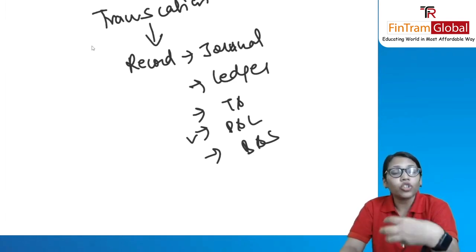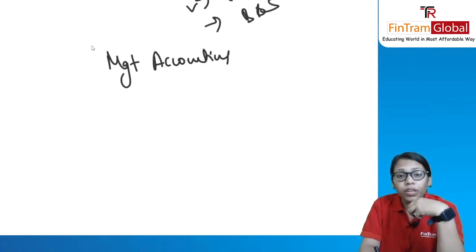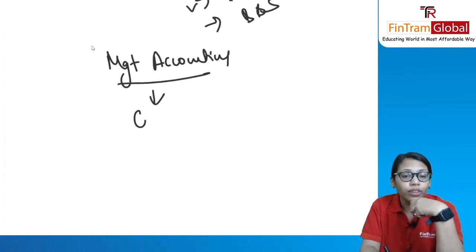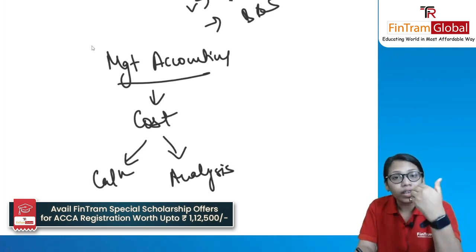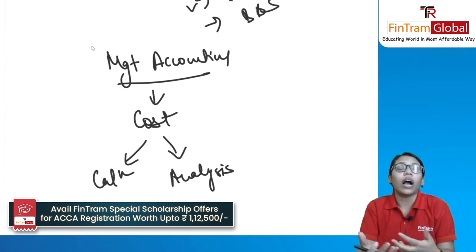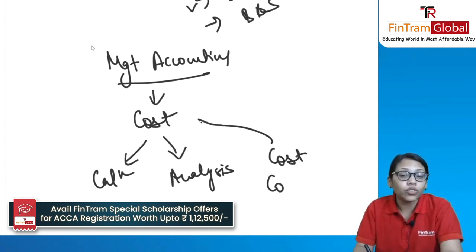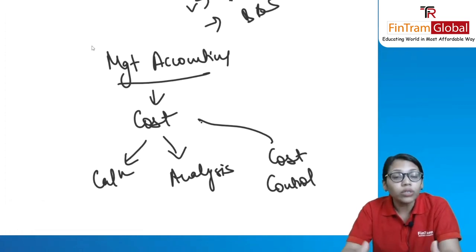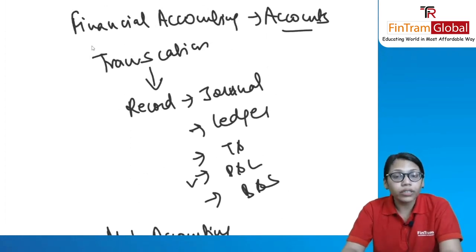Management accounting, on the other hand, is all about cost. You calculate the cost, then analyze whether the cost incurred is appropriate or inappropriate. If the cost is inappropriate — meaning too high — you find alternatives to reduce or control it. That is the basic crux and functioning of management accounting.